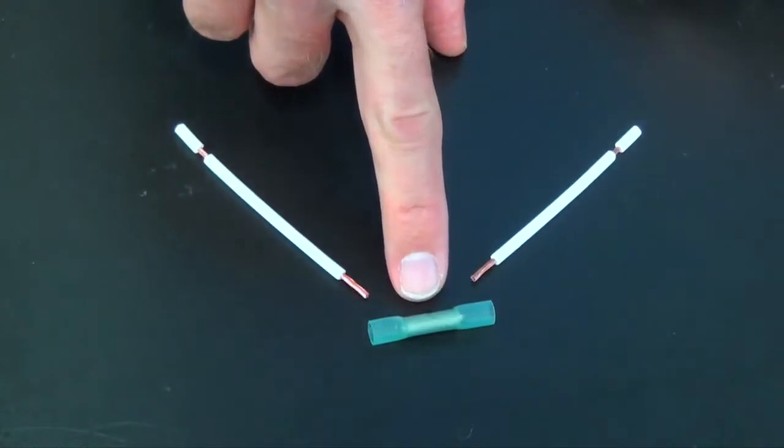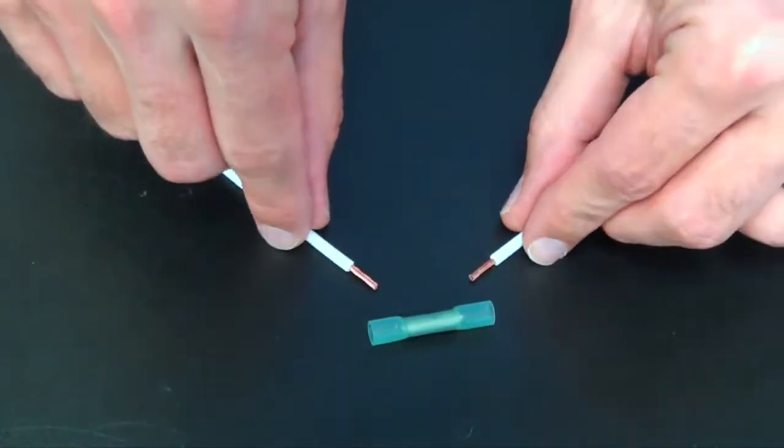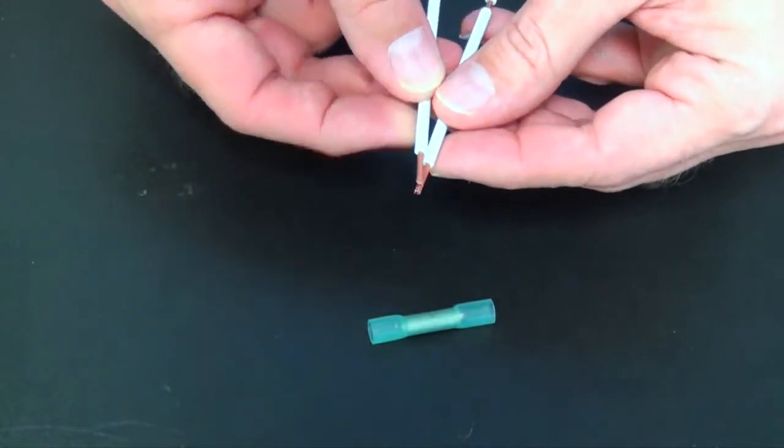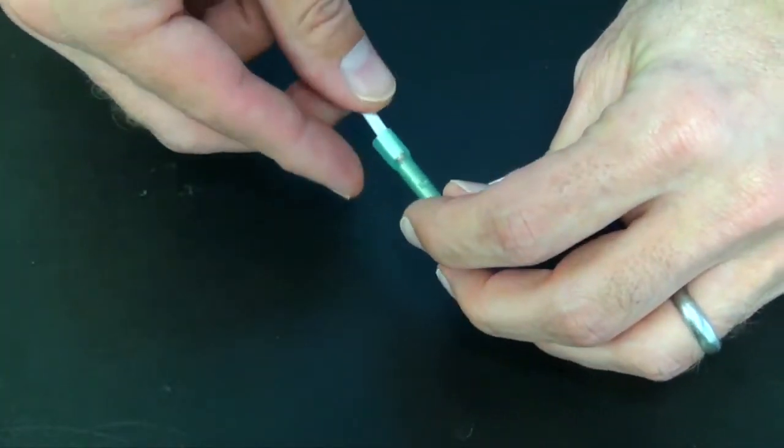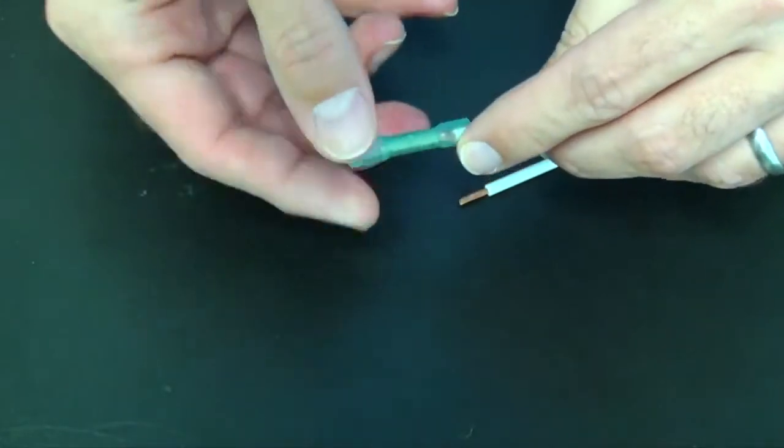To install this sealed crimp butt connector, make sure you follow the package's instructions for the proper wire strip lengths. Insert your first wire into the barrel, making sure that the ends of your wire butt up against the terminal's wire stop.